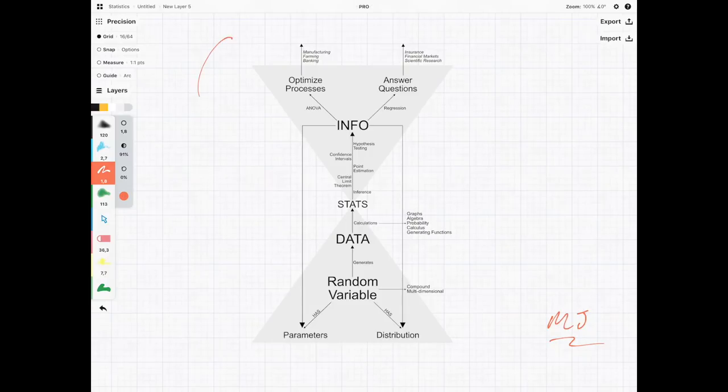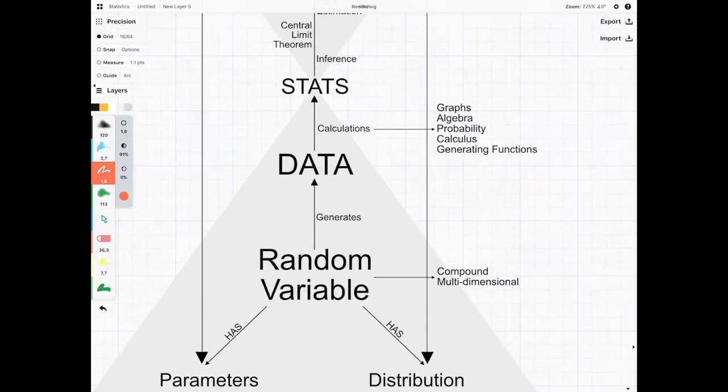By now you should be quite comfortable with this image which tries to explain all the statistics in a nutshell. What I want to do here is look at this component called data, because before this we have been assuming that all of the data has been the result of a single random variable.